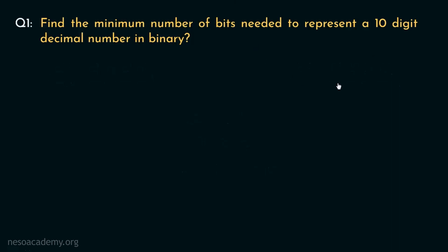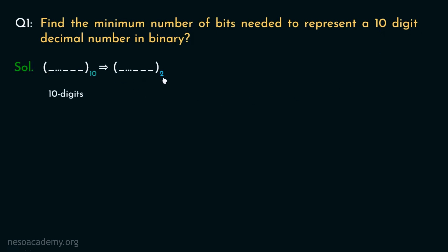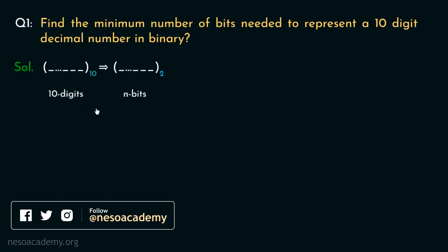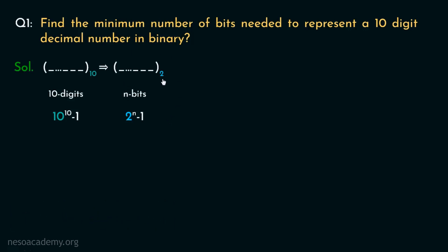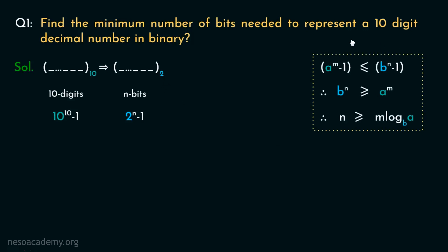Now let me show you how to apply this formula. We are converting a decimal number to binary, and the decimal number has 10 digits. Let's assume the converted binary value has n bits. The maximum decimal value with 10 digits is 10 nines, which is 1 less than 10 raised to the power 10. Similarly, the maximum value of an n-bit binary is 2 raised to the power n minus 1. The target number system here is binary, so we apply the formula we just derived.